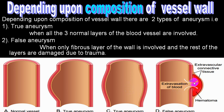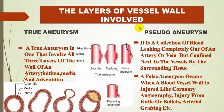When blood is collected between the arterial wall, adventitia, and extravascular connective tissue, we call that a pseudoaneurysm or false aneurysm. A saccular aneurysm involves only one portion of the artery, while fusiform involves the entire diameter. When there is a stalk that becomes elongated, we call it pedunculated.